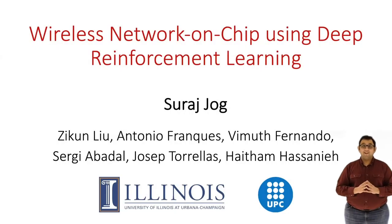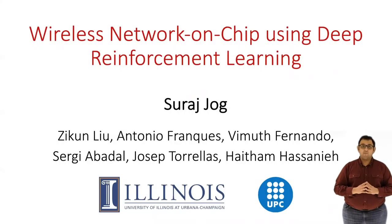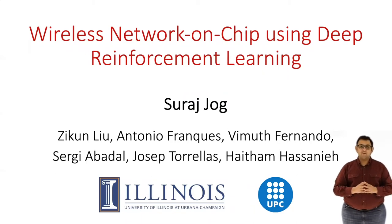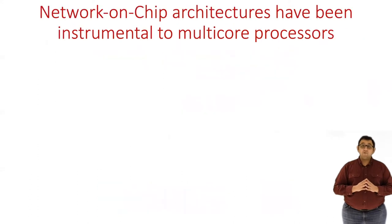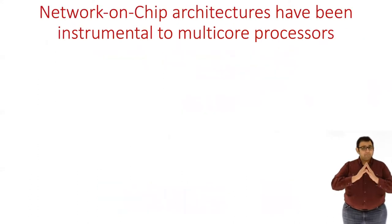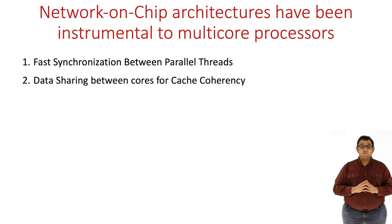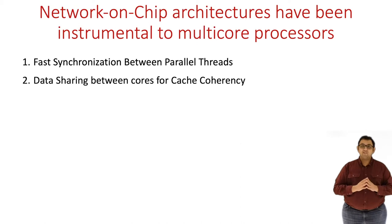Hello everyone, I am Suresh Jog and today I am here to talk about our work on wireless network on chip using deep reinforcement learning. Network on chip architectures have been instrumental for enabling massive multicore processors that can run highly parallelized applications. These network on chips facilitate fast synchronization and data sharing between threads, ensuring cache coherency and correctness of execution.